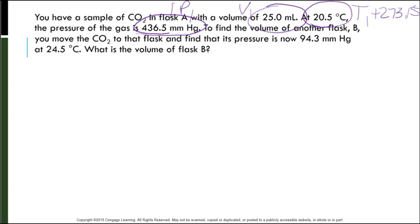To find the volume of another flask B, so this is my V2, which is question mark, you move the CO2 to that flask and find that its pressure is now 94.3 millimeters of mercury, so that's P2, at 24.5 degrees Celsius. That's T2. What is the volume of flask B?